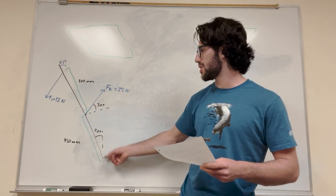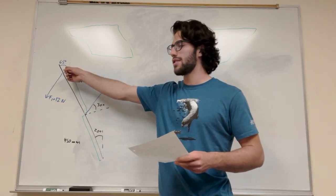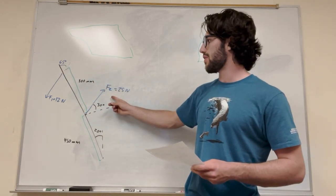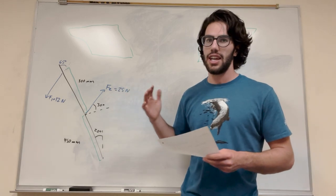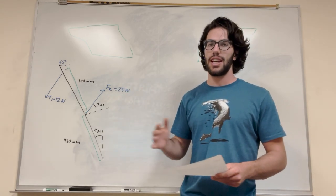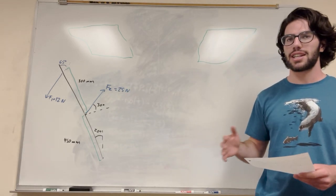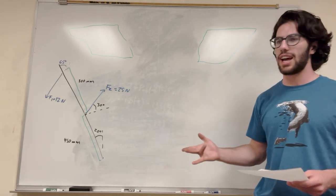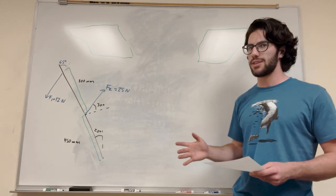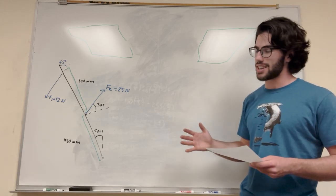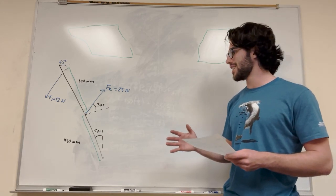So we're going to need two position vectors, and we're going to need these two forces in X, Y, and Z — basically I, J, and K — but there's no K, so that's going to make things a little easier at least.